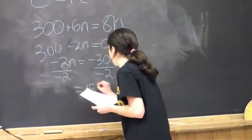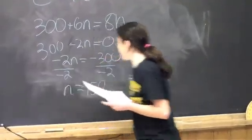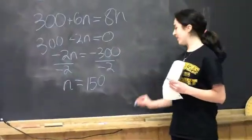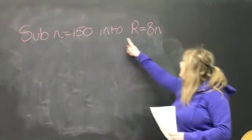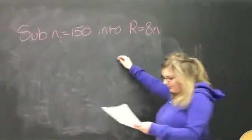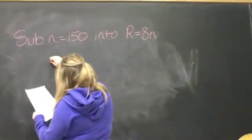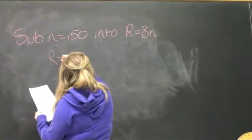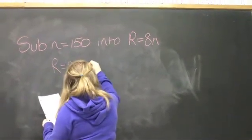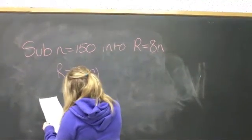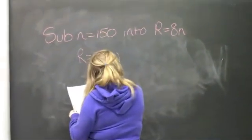So, therefore, N is equal to 150. From here, we need to sub N equals 150 back into R equals 8N. So, we do R equals 8N times 150, and that is equal to 1200.